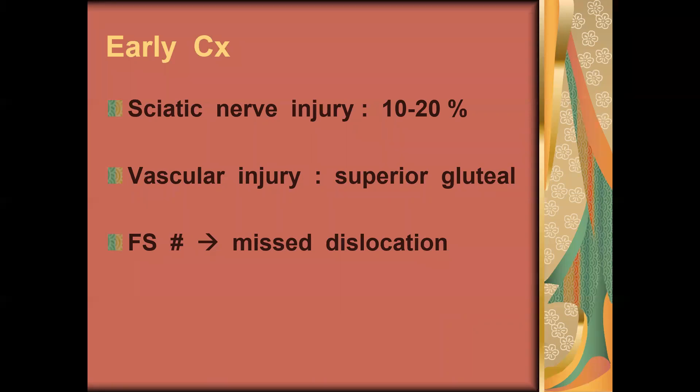Early complications of posterior hip dislocation include sciatic nerve injury, which occurs in 10 to 20%. Most likely it is neuropraxia, which resolves spontaneously. Also vascular injury, usually the superior gluteal vessels.